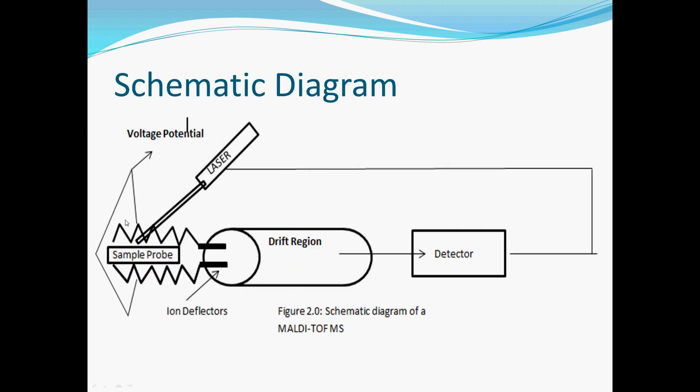Here's a schematic diagram. The sample probe is ablated with a laser which generates sample analyte ions which are then driven by a voltage potential into the drift region and eventually detected by a detector. This detector is a time-of-flight detector which then measures the time of flight that it takes to go across the drift region.